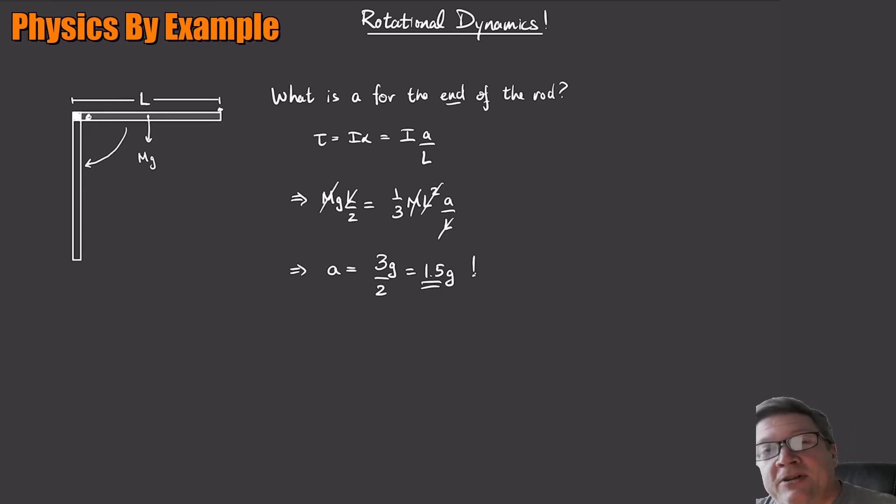The problem is, as it falls, that gravitational torque is going to be in a different direction. That r is going to be in a different direction. So when the rod gets to be here, for example, now the gravitational torque is pointed down, but the r is pointed there. So now we have our sine theta that we have to take into account. So it gets more complicated as the thing falls.